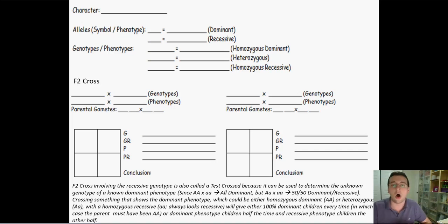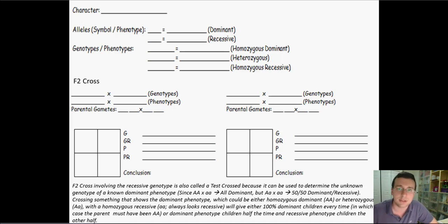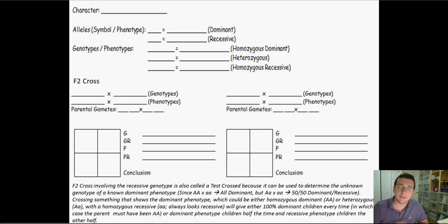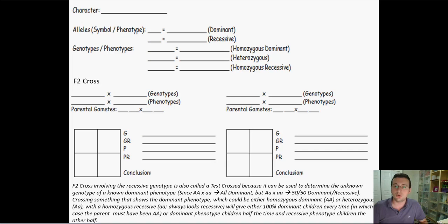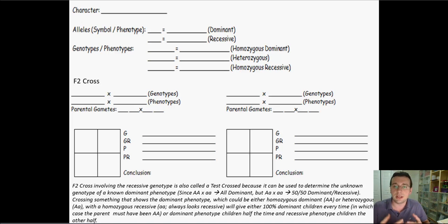He had figured all of this out, and he did painstaking work in thousands of crosses as shown in the previous video. But he didn't stop here. Now he wanted to find out if he actually had this right — could he use this knowledge to predict the outcome of any cross? So he took it a step further and tried to do what we call the test cross, also referred to as the F2 cross, performed by Mendel just to figure out if he had this right.